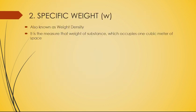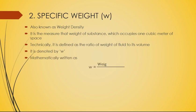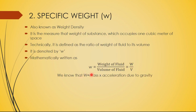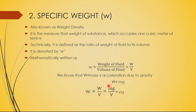The second property is specific weight, denoted by small w, also known as weight density. It is a measure of the weight of a substance occupying one cubic meter of space. The formula is w = W/V, and since weight W = mg, we can write: w = mg/V = (m/V)g = ρg. So specific weight equals density multiplied by acceleration due to gravity.